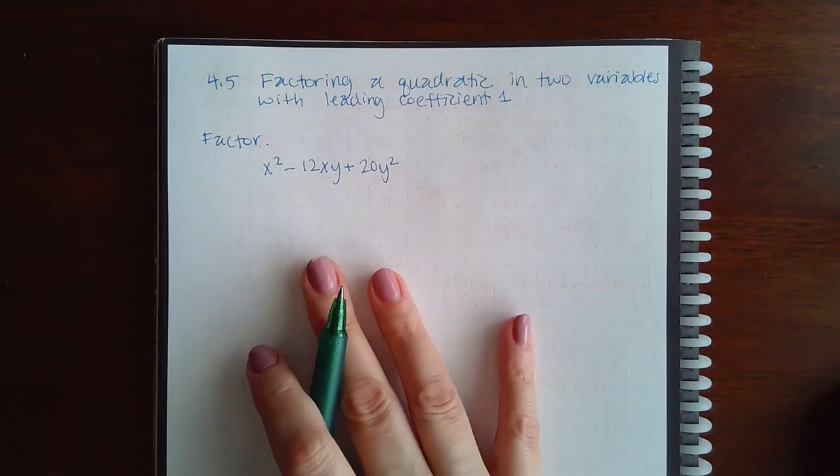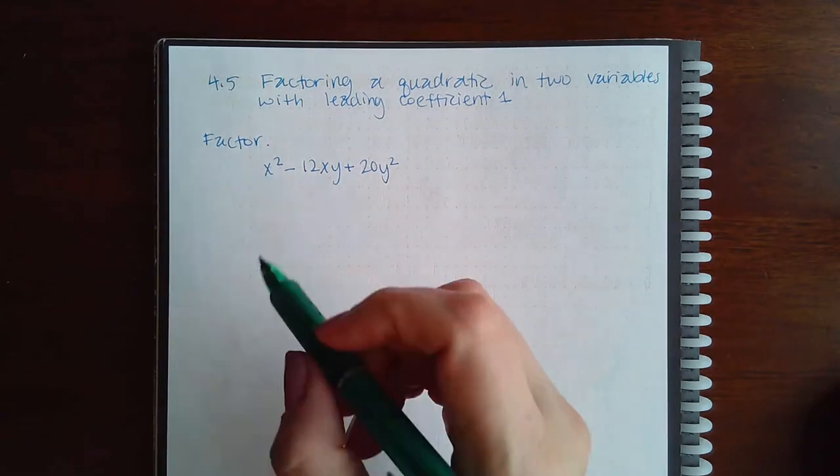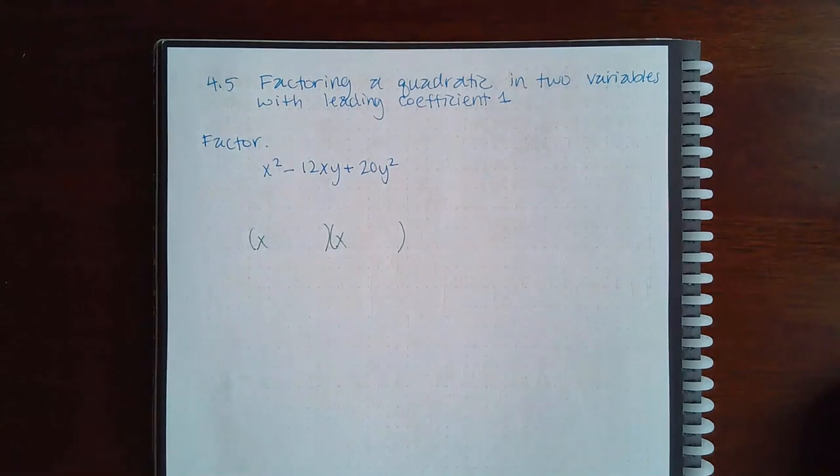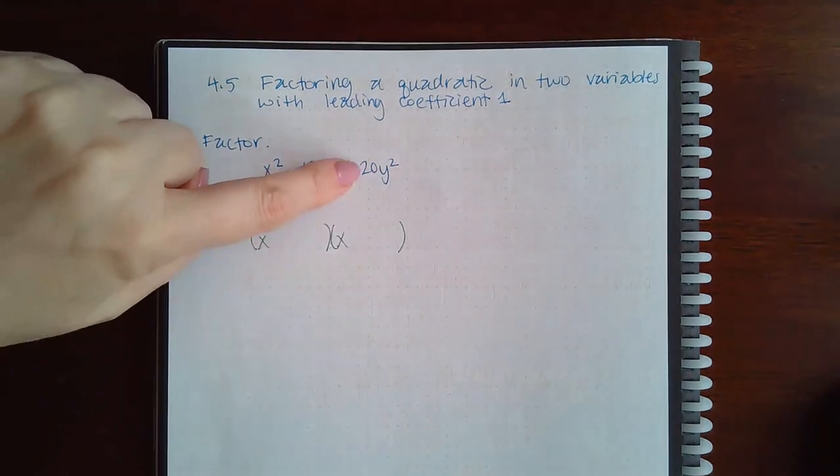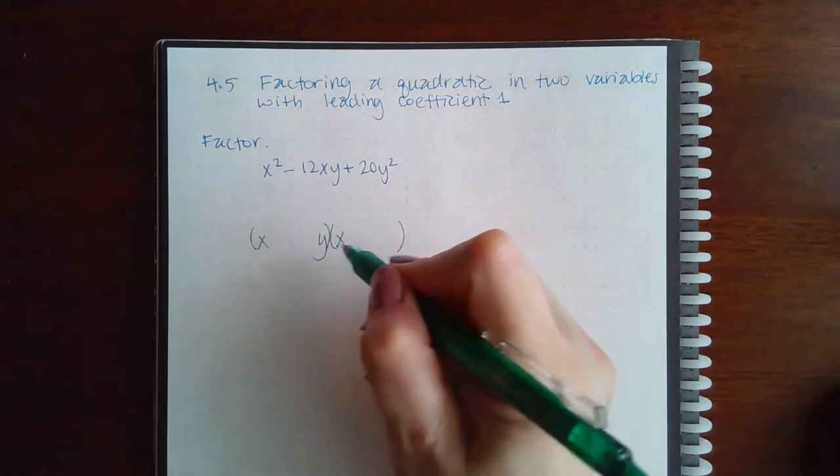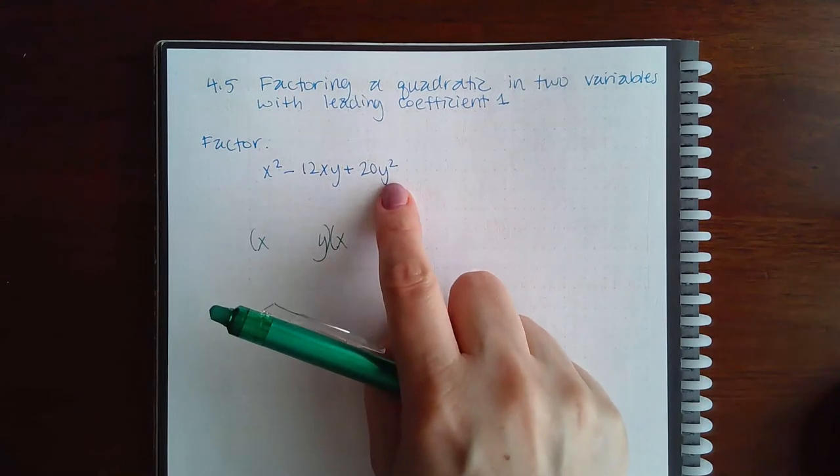This is also a quadratic with leading coefficient of one, so we can do the same thing that I did before. The only difference is that this last term now has a variable on it as well, so it needs to have that y times y so that when I multiply these I end up with y squared.